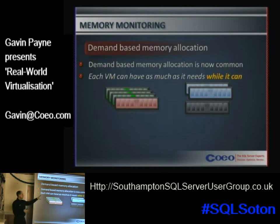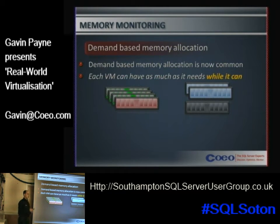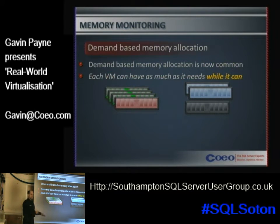That's where demand-based memory allocation will recognise a low memory condition within a specific virtual machine, determine that it would benefit from having more memory, and if there's physical memory available to give, it will be allocated to it.